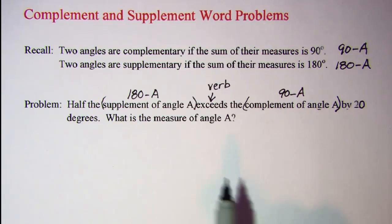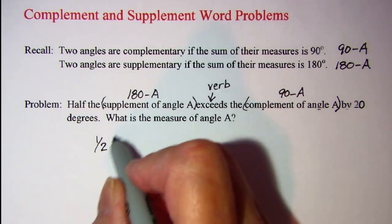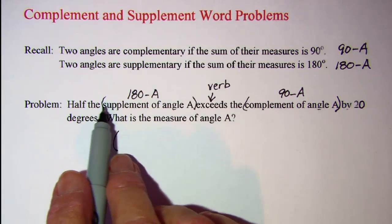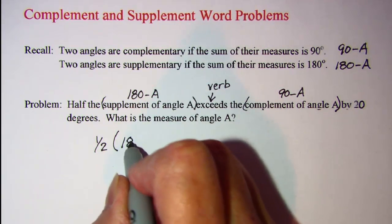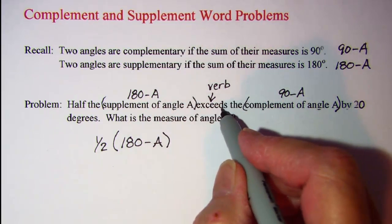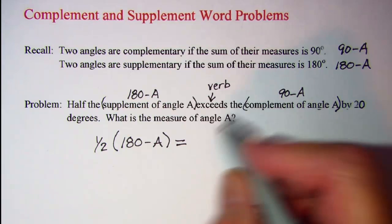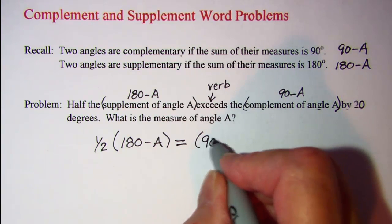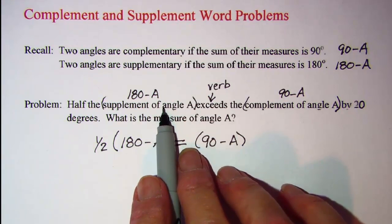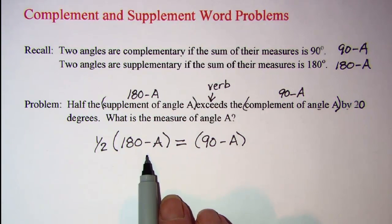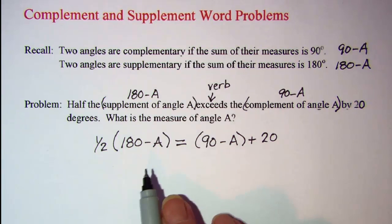Let's write our equation for this word problem. Half the supplement — this is like half of the supplement, and 'of' we know means multiply. So half the supplement of angle A equals the complement of angle A, translated as 90 minus A, by 20. Since it exceeds, the left side is more, so I'm going to add 20 to the right side so that it'll be equal. That's what an equation means — the two sides are equal.